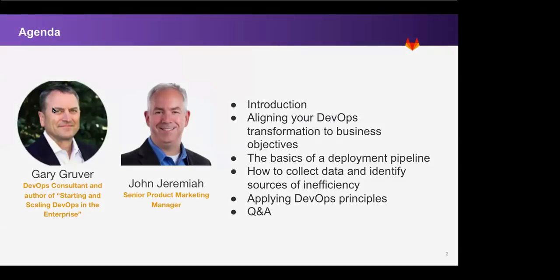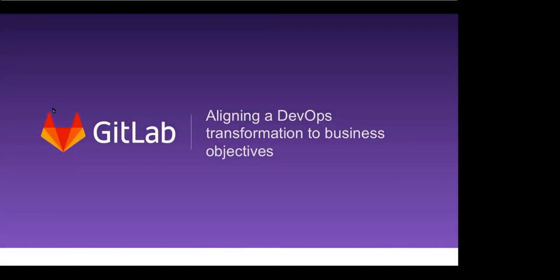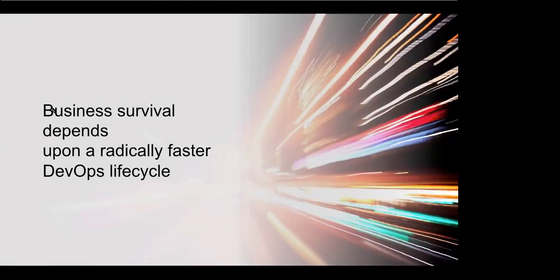I want to talk a little bit about how we align and how we think about DevOps from a transformation perspective, and how it drives and should align to our business objectives. Mark Andreessen said a few years ago that software is eating the world, and it really gets to the point that we have to move faster than ever. And as we try to move faster, software is ever more critical to what our business objectives are.